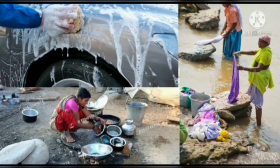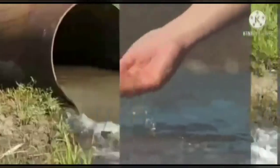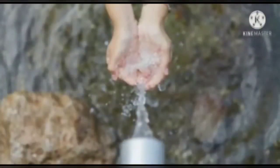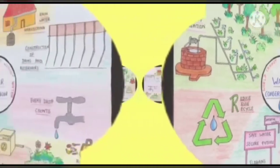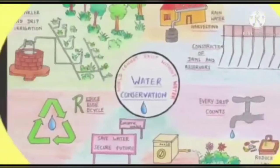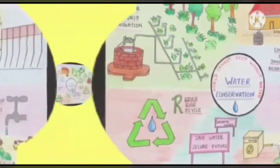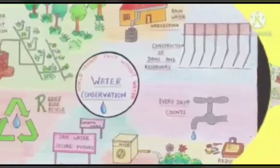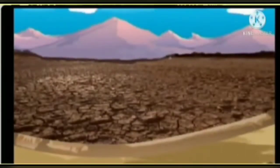Let us see how we can prevent water pollution. Water from industries should be cleaned before joining water bodies. We should not clean our pet animals and vehicles in drinking water sources. We can reuse water whenever possible. Create awareness among people regarding conservation of water.